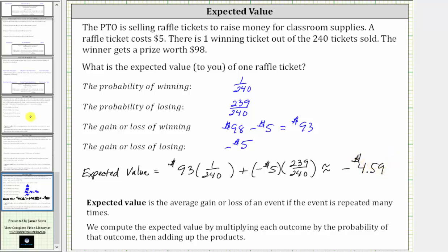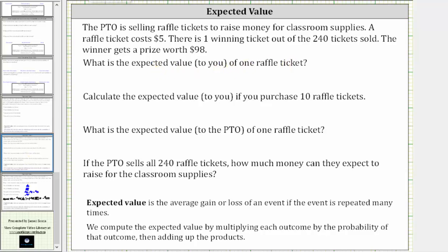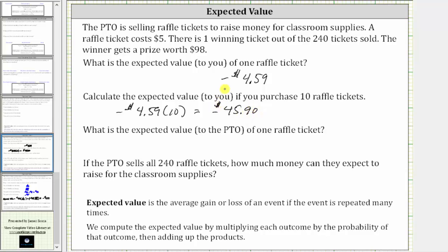Going back to the first slide, the expected value to you of one raffle ticket is negative $4.59, which means you can expect to lose $4.59 for buying one raffle ticket. Next, we're asked to calculate the expected value if you purchase 10 raffle tickets. To calculate this, we multiply negative $4.59 by 10, which equals negative $45.90. So if you buy 10 tickets, you can expect to lose $45.90.